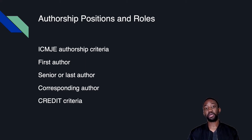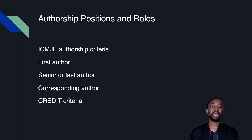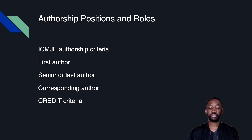The corresponding author communicates with the journal and editorial board. This is often the first or last author, but it can be anyone — usually the person submitting. Some journals allow the submitting author to differ from the corresponding author. If you are neither a first nor a senior last author, you are generally a middle author. More credit is given to first and senior authorship than to middle authorship.